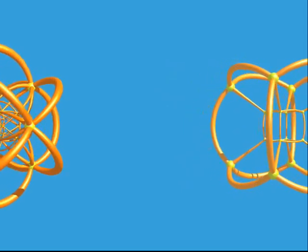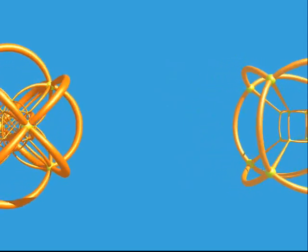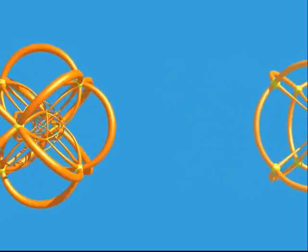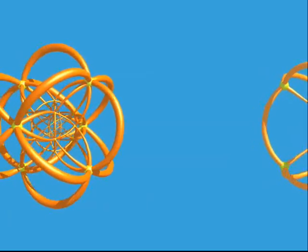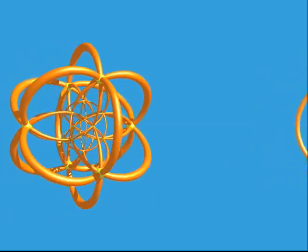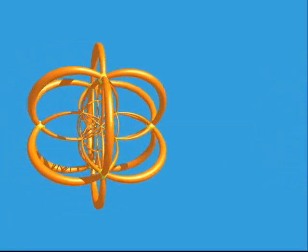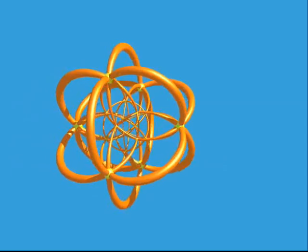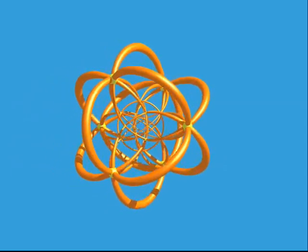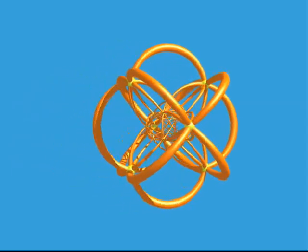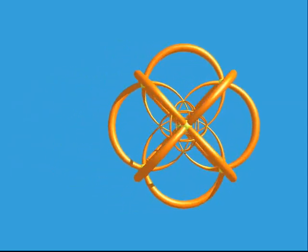Seeing things this way is so much easier than with the shadow method or the three-dimensional cross sections. Here's the 24-cell, with 24 vertices and 96 edges.